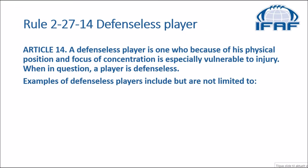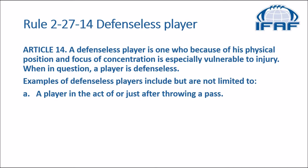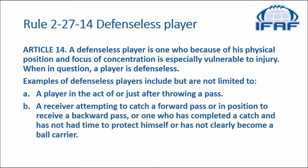Before we get to the game film, let's have a look at what the rulebook and the MOFO have to say on this topic. In the rulebook, we start with the definition of a defenseless player. A defenseless player is one who, because of his physical position and focus of concentration, is especially vulnerable to injury. When in question, a player is defenseless. Examples include: A) a player in the act of or just after throwing a pass; B) a receiver attempting to catch a forward pass, or in position to receive a backward pass, or one who has completed a catch and has not had time to protect himself or has not clearly become a ball carrier.